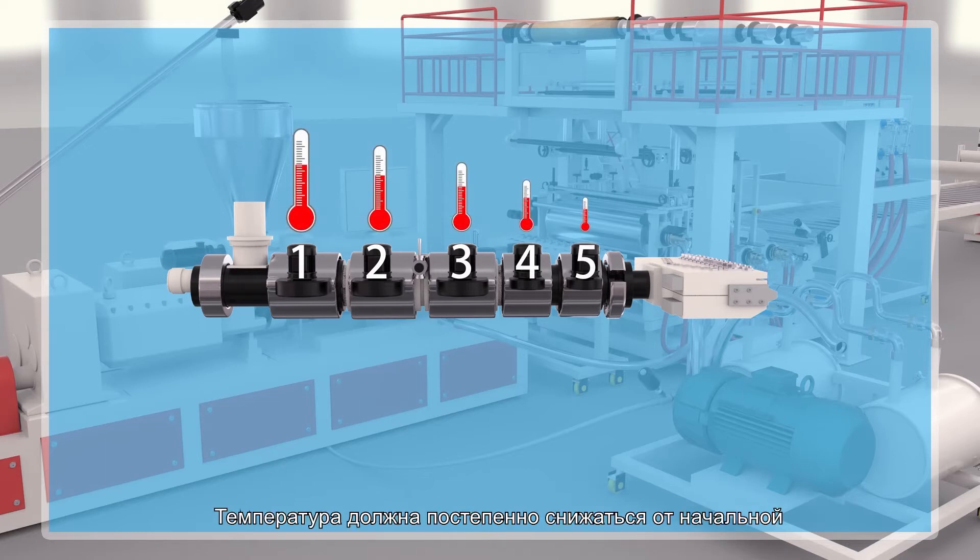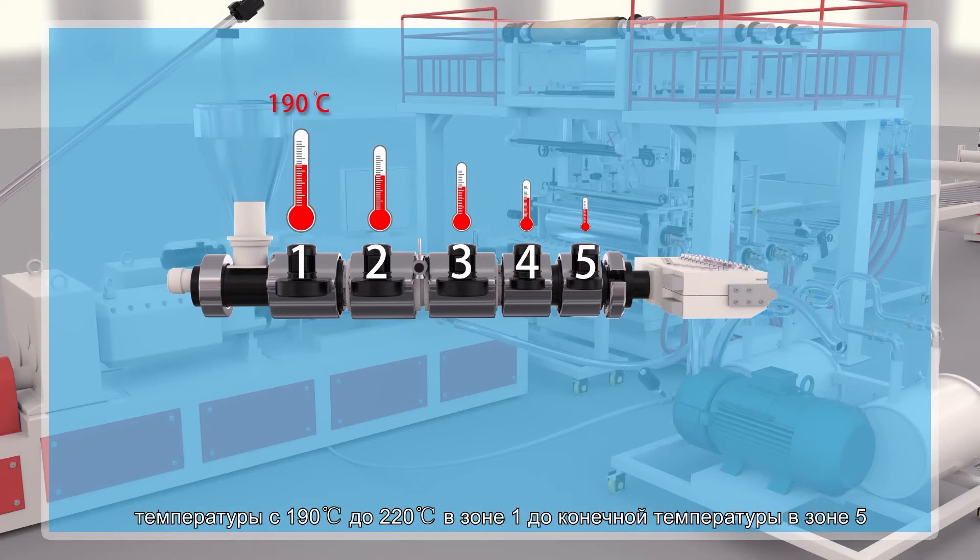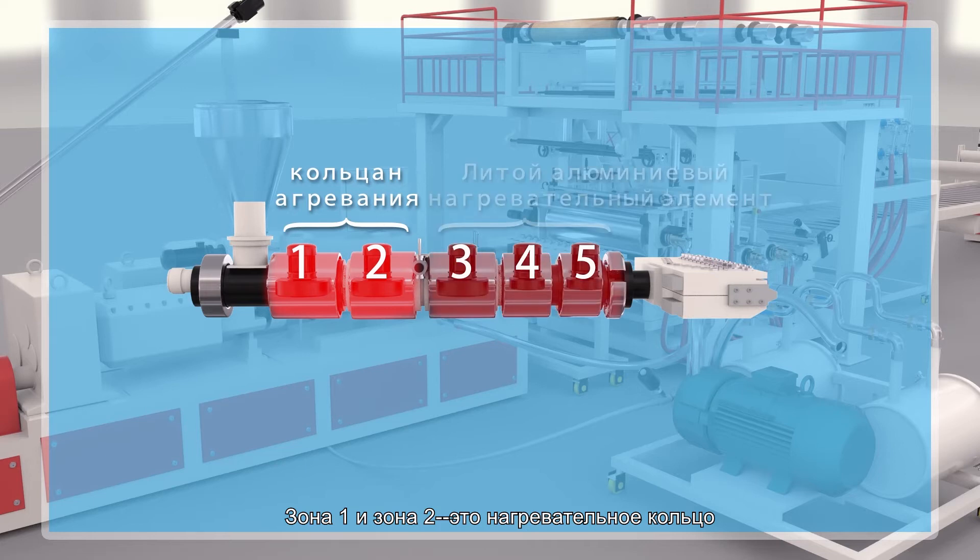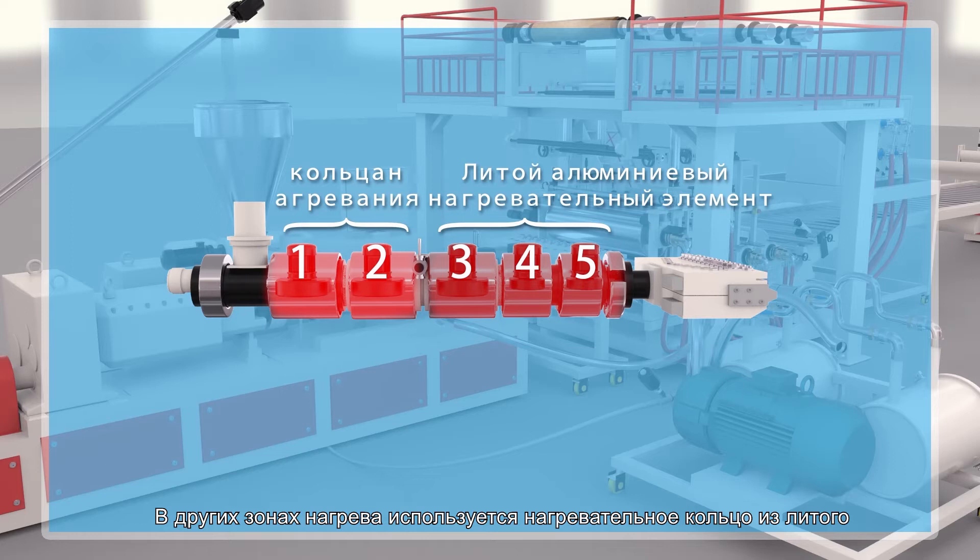The temperature control of Boyu SPC floor production line is divided into 5 zones. For the temperature settings, it is gradually decreased from zone 1 with initial temperature of 190 degrees centigrade to 220 degrees centigrade to zone 5. For hardware, zone 1 and zone 2 adopt heating coils.